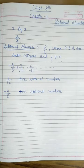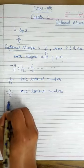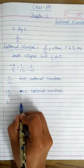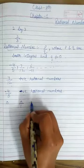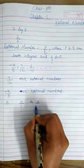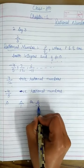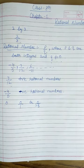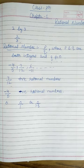Is 0 a rational number or not? Yes, 0 is a rational number because 0 can be expressed as 0 by 1 or 0 by minus 5 — the answer remains 0. Therefore, 0 is also a rational number. Remember that 0 is neither positive nor negative.